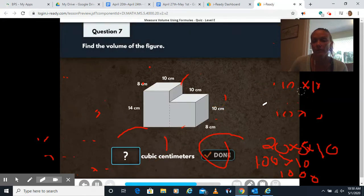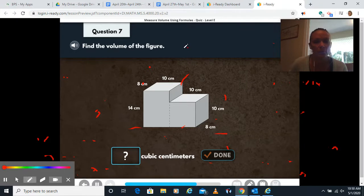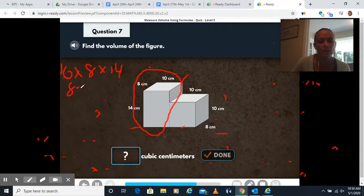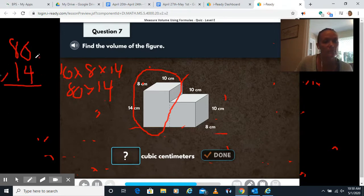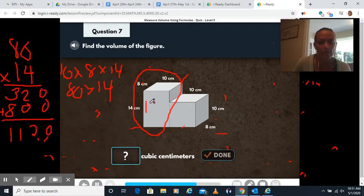Find the volume of the figure. So now we have two figures and we're going to have to find each one's volume and then combine those two to figure out the volume of the entire figure. So first, here's our first shape. We're going to do 10 times 8 times 14. So 10 times 8 is 80 times 14. I'm going to do 80 times 14 over here. 4 times 0 is 0. 4 times 8, use your chart if you need to, 32. My placeholder here. 1 times 0 is 0. 1 times 8 is 8. Add these up. 0 plus 0 is 0. 2 plus 0 is 2. 3 plus 8 is 11. So for this one, we have 1120.